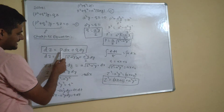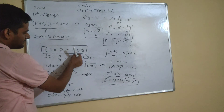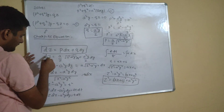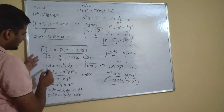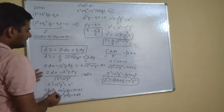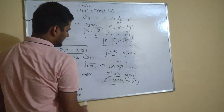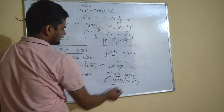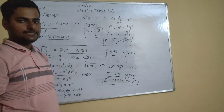Quick summary: bring everything to the left, write Charpitt's equation, find all partial derivatives (del f/del x through del f/del z, del f/del p, del f/del q), substitute into Charpitt's equation, pick two easy fractions and equate them, integrate to find a relation (here p² + q² = a²), substitute back to find p and q explicitly, then use dz = p dx + q dy and integrate to get the final answer z² = (ax + b)² + a²y².